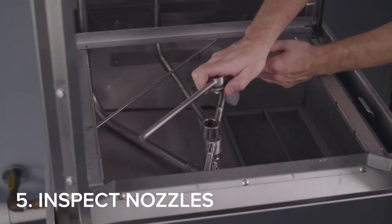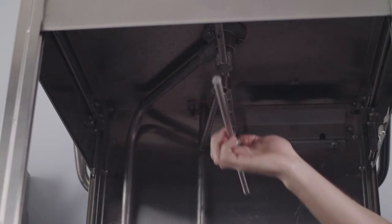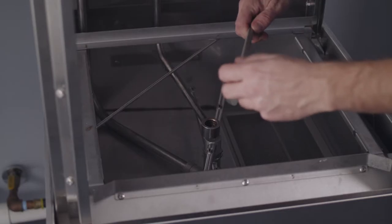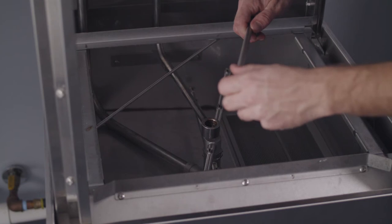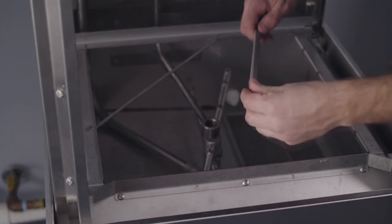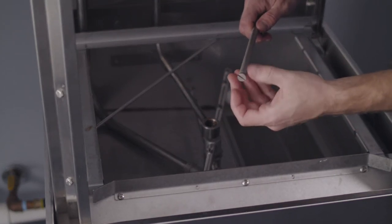Remove the wash and rinse arms and verify the nozzles are free from obstruction. If clogged, remove the end caps, clean with a brush, and flush with fresh water. Ensure the end caps are securely refastened.